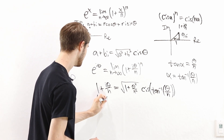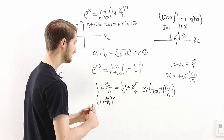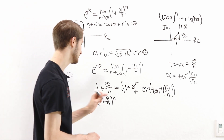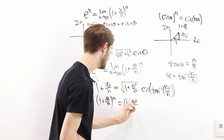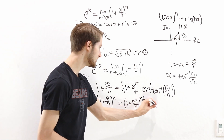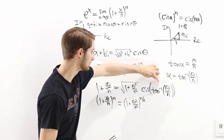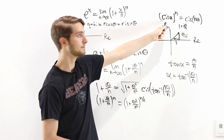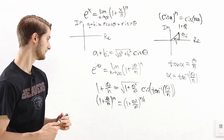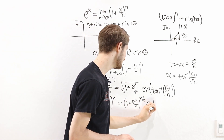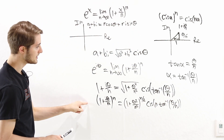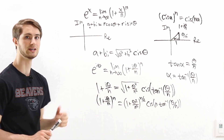Now we need 1 plus i theta over n raised to the power of n. Taking the polar form and raising it to the power of n means raising both parts to the power of n. The square root is the one-half power; raising that to the power of n multiplies exponents, giving the exponent n over 2. For the cis part, we use our earlier formula: cis of an angle to the power of n equals cis of n times that angle. So we get cis of n times the inverse tangent of theta over n. This is the expression we plug into our limit for e to the i theta.